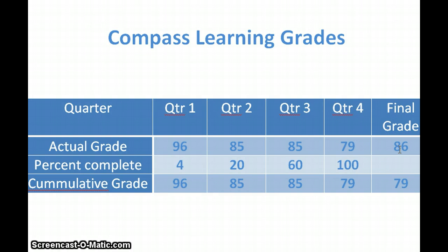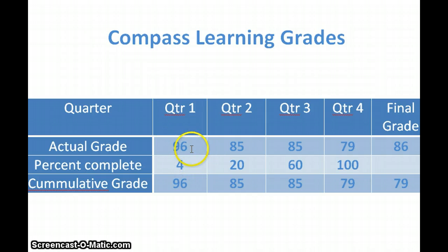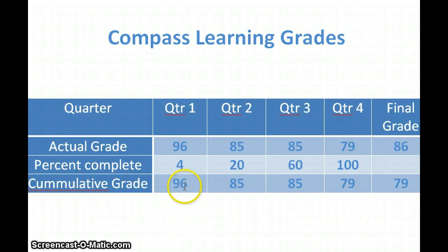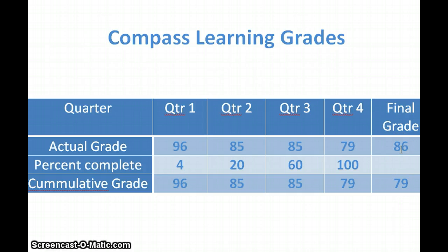Because our students don't have a required amount they have to finish at the end of each quarter, they could only have a small amount done and that would count for a quarter of their grade — that's not going to work. So what we do is figure it as a cumulative grade. This is the grade for everything finished at the end of quarter one, and the same for each subsequent quarter. You can see that the student's final grade is actually a 79, not a 96.